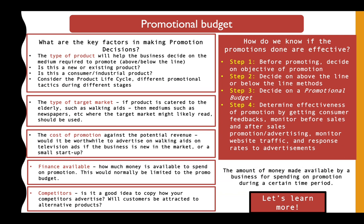After setting objectives, decide on the method of promotion — above the line or below the line — and determine how much to set aside for this promotion. Once those steps are done, step four is to determine the effectiveness of the promotion. While the campaign is running or coming to an end, gather customer feedback and monitor your sales pattern to see whether there is an increase in sales, if that was your objective.